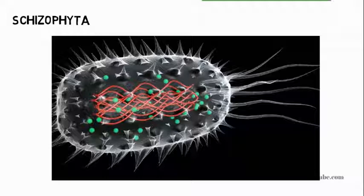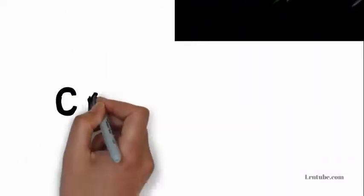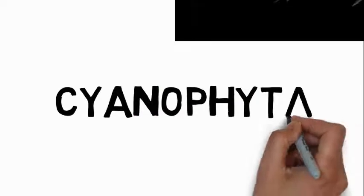The keywords you need to know about phylum Schizophyta are: they are non-green, meaning they are heterotrophs, and their means of reproduction is binary fission. For Cyanophyta, they are microscopic in nature and do not have cilia, flagella, or other locomotive organelles, but some of them move by gliding.